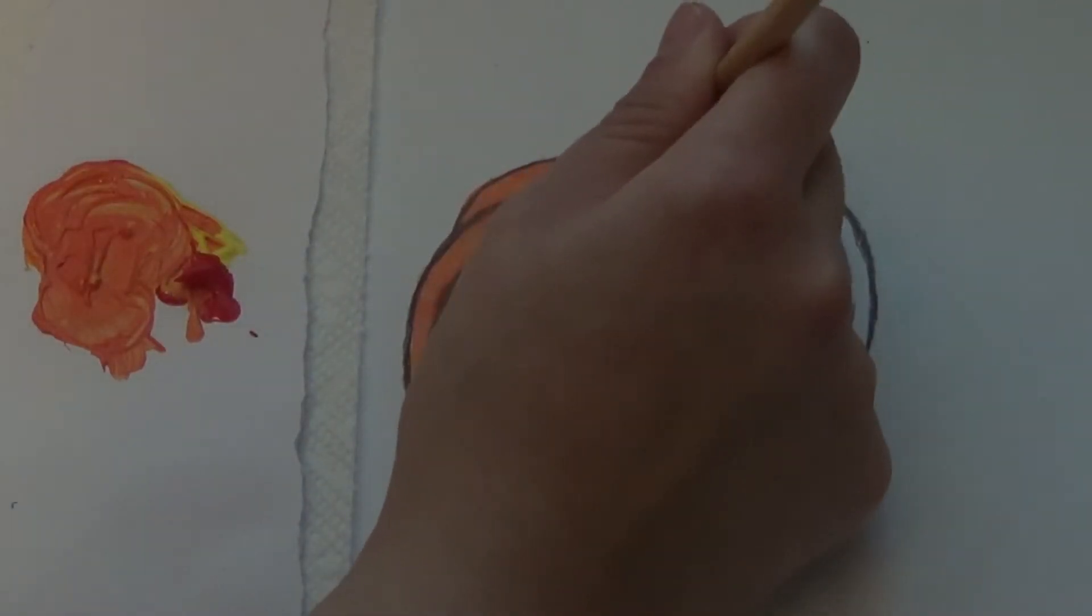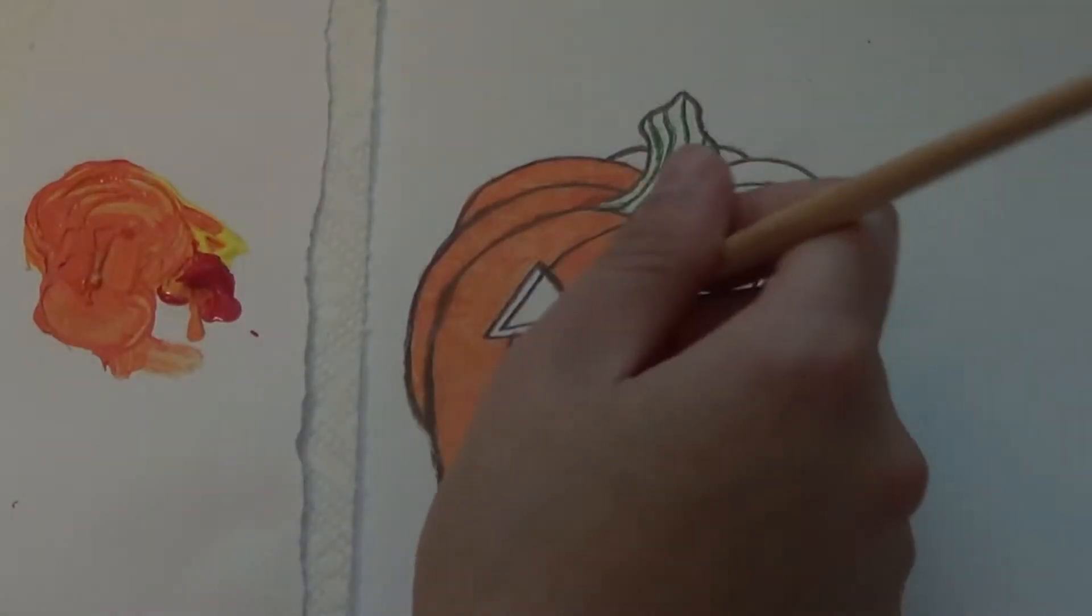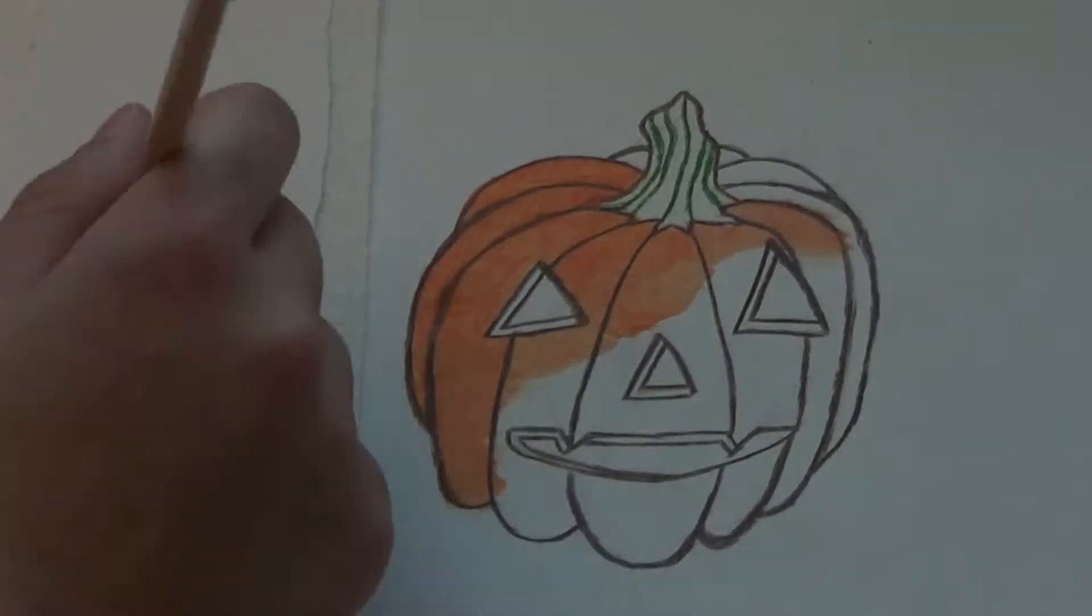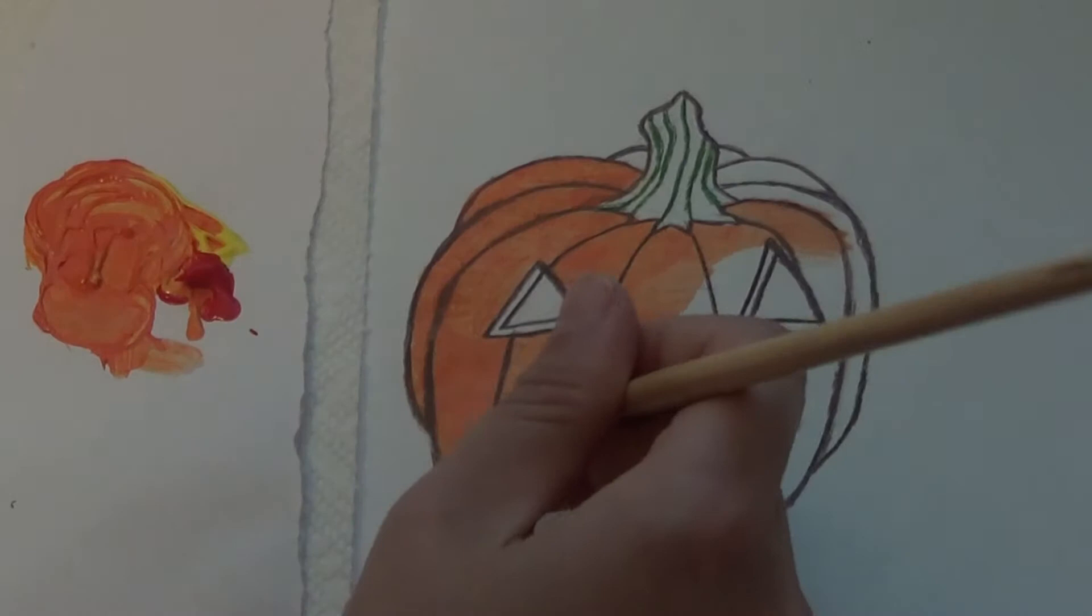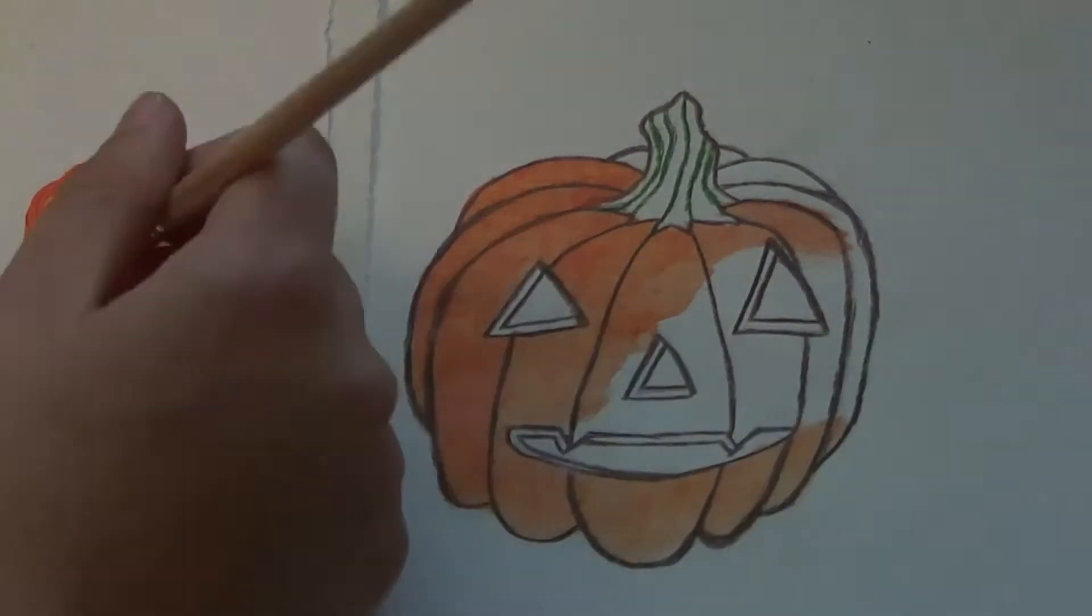So I'm going to water down the orange a little bit and just go over the whole jack-o-lantern except for inside the eyes nose and mouth and also not go over the stem.